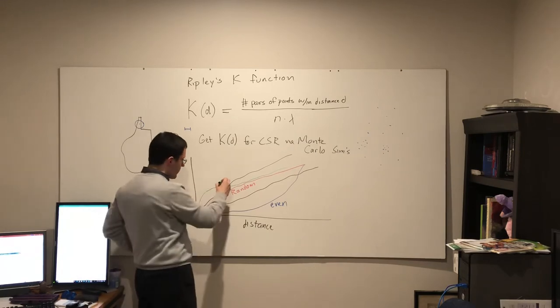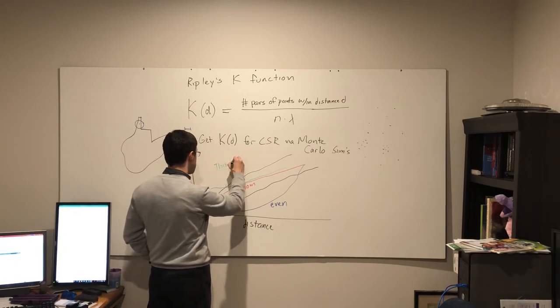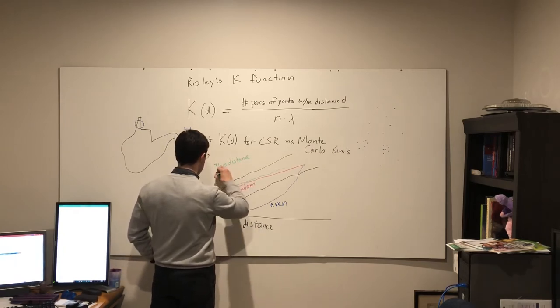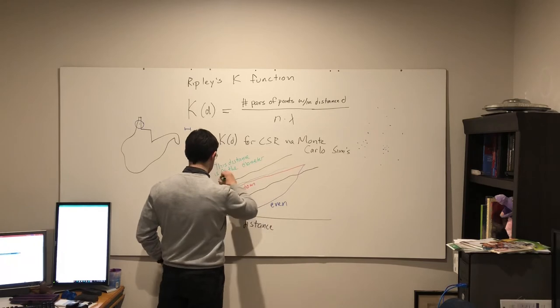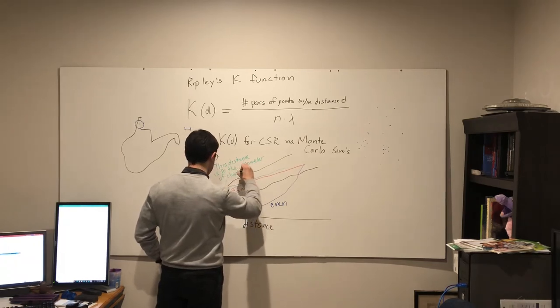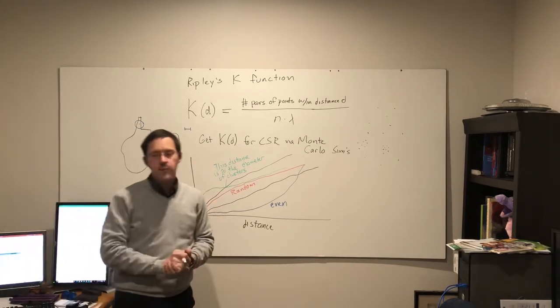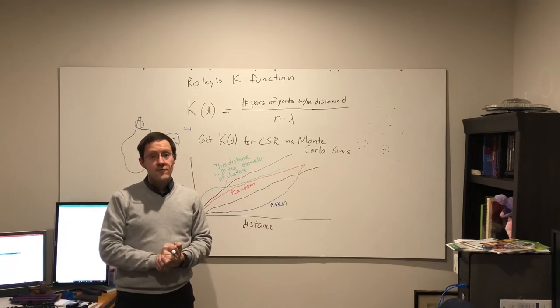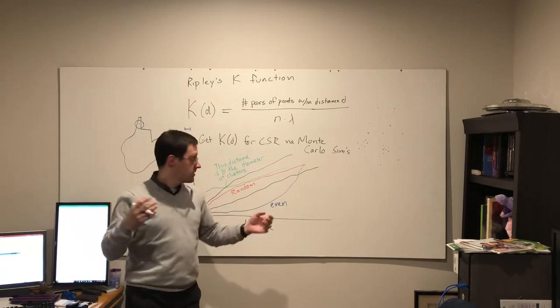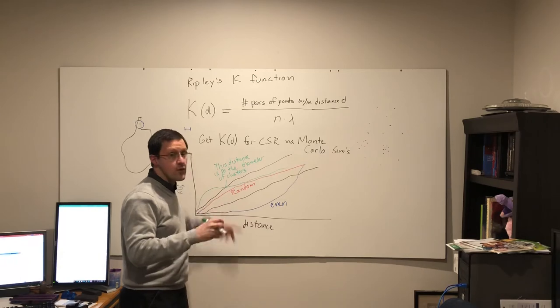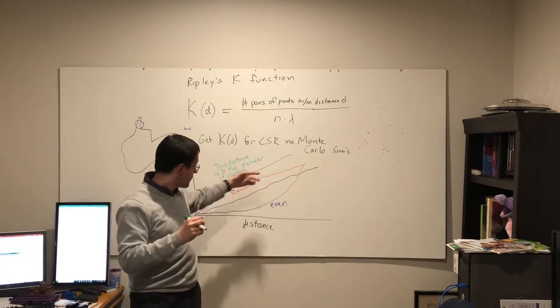That distance where it rejoins random, that's roughly how big the clusters are. If anything that is overstating the size of the clusters, but it is more or less telling you at distances shorter than this, there are too many points that are that close to each other. Beyond that, it's random.